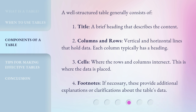A well-structured table generally consists of: 1. Title — a brief heading that describes the content. 2. Columns and rows — vertical and horizontal lines that hold data; each column typically has a heading. 3. Cells — where the rows and columns intersect; this is where the data is placed. 4. Footnotes — if necessary, these provide additional explanations or clarifications about the table's data.